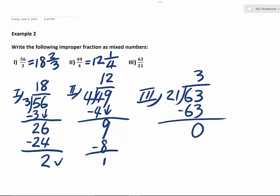So there's no remainder. So in this case, you're just going to end up with 3.